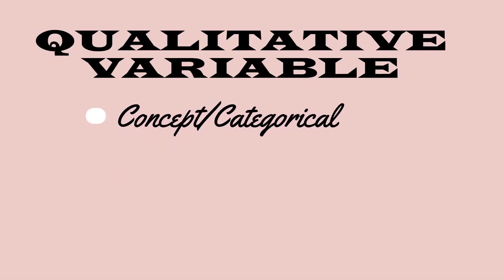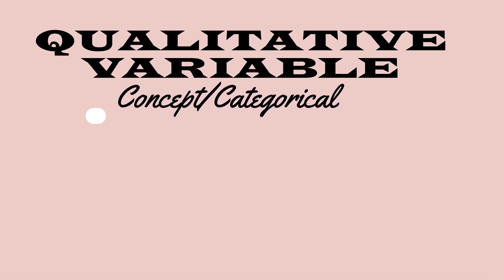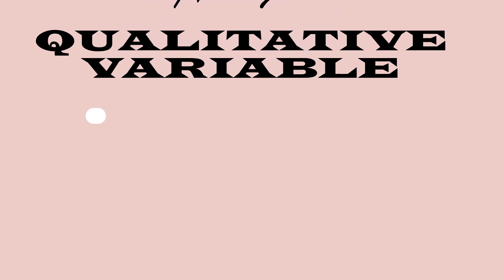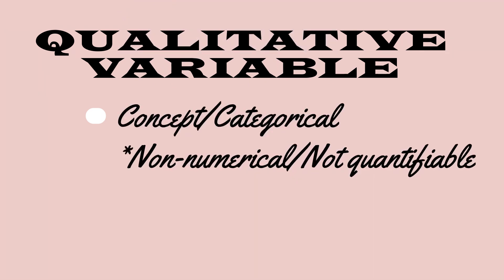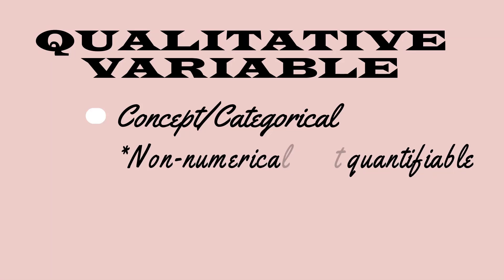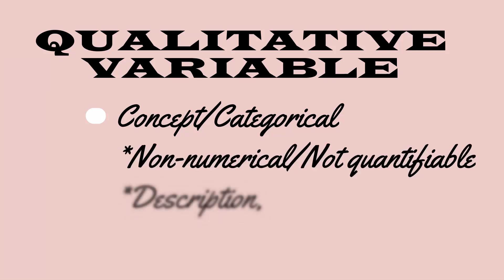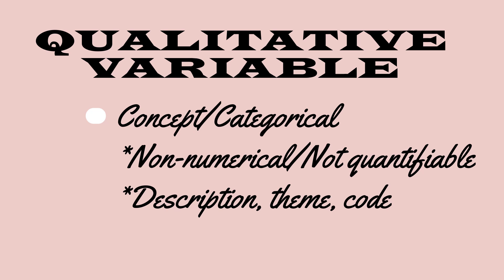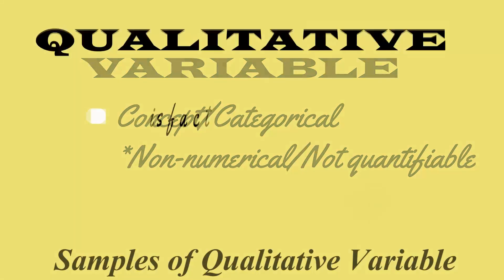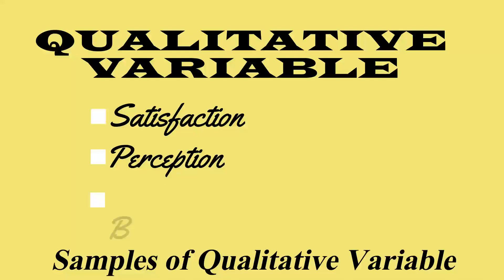The next variable is concept, used in qualitative research, also known as a categorical variable. It is considered a variable but is non-numerical — not quantifiable and cannot be counted or measured like quantitative data; instead it is categorized. The data in qualitative research are transformed into final description, themes, categories, and codes. Examples are satisfaction, perception, and beliefs — things we cannot actually measure numerically. We usually describe variables into categories, like for satisfaction: very satisfied, satisfied, or dissatisfied.